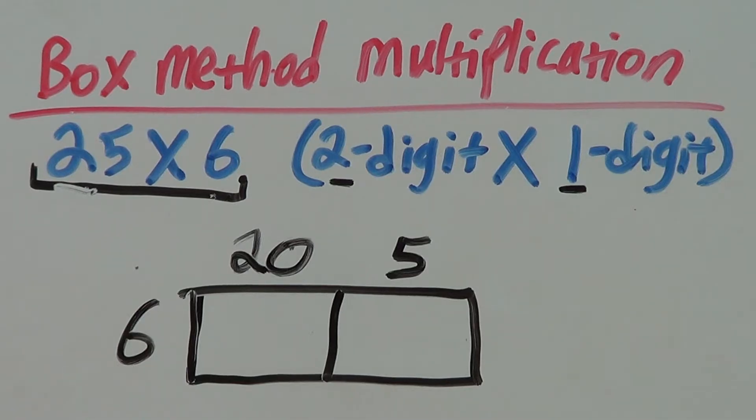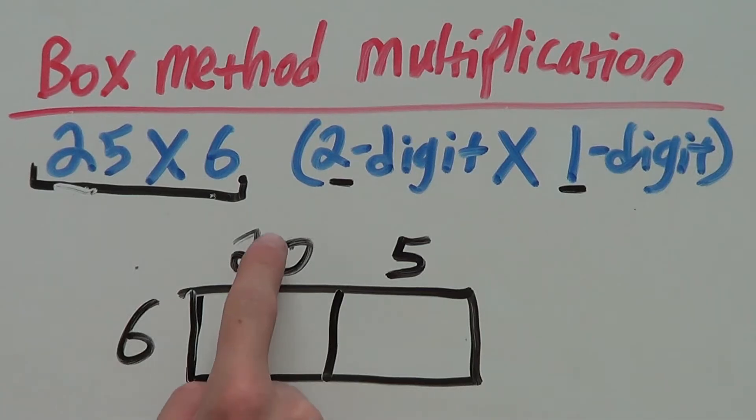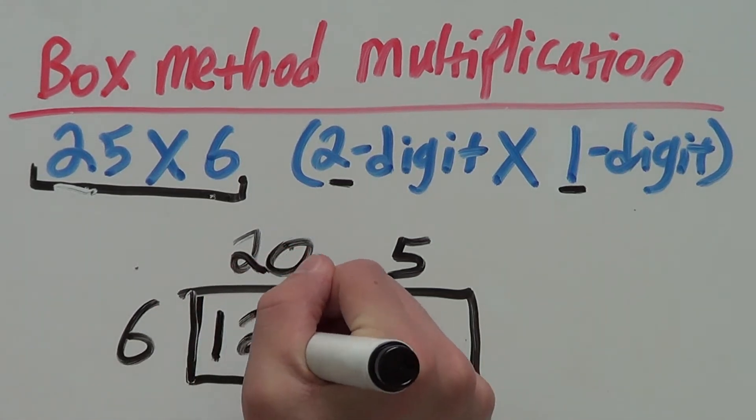All we have to do now is multiply. As we can see, this box here, we have 20 times 6. 20 times 6 is 120.